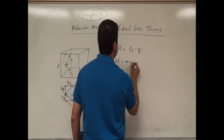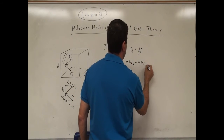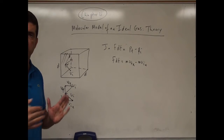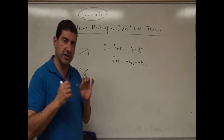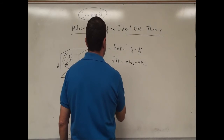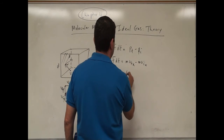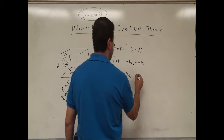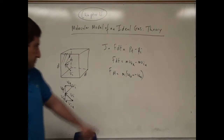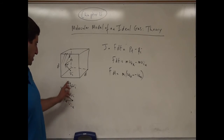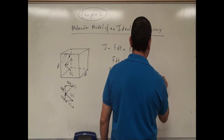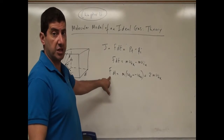So p final minus p initial is m·v_final_x minus m·v_initial_x. But the final x and initial x magnitudes are the same because it's a perfectly elastic collision — we're assuming no absorption by the sides of the box. So v_initial_x equals negative v_final_x. That means f·dt equals m·v_final_x minus (negative m·v_final_x), which equals 2·m·v_final_x. This gives you the instantaneous force.